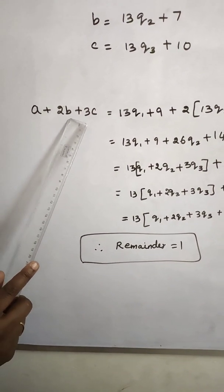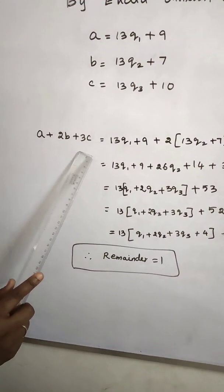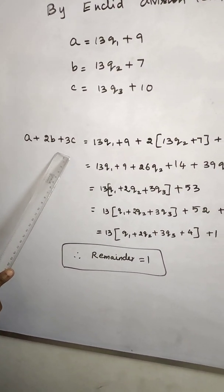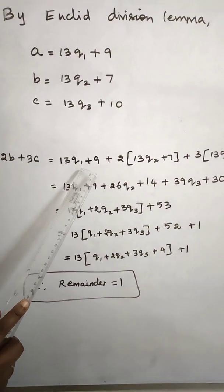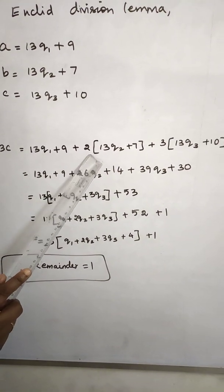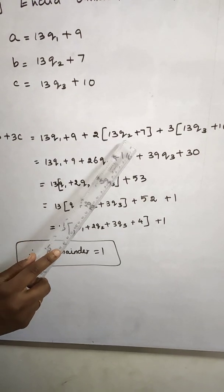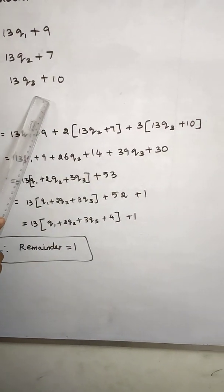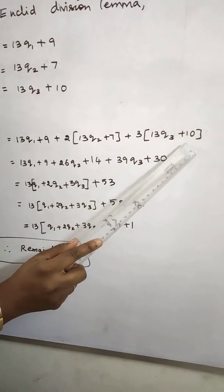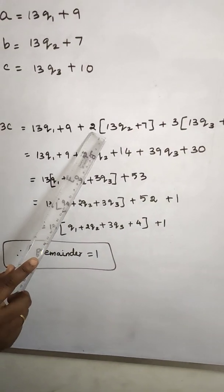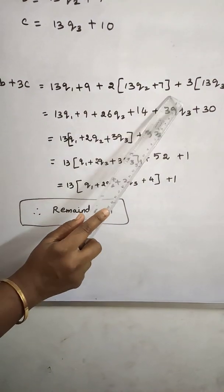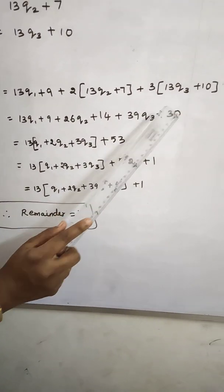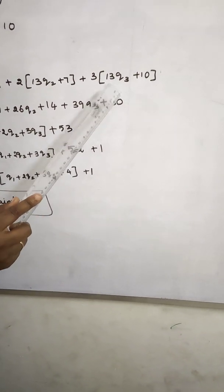A plus 2B plus 3C, this thing is divided by 13. First, substitute values. A is equal to 13Q1 plus 9, 2B is equal to 2 times 13Q2 plus 7, which equals 13 times 2Q2 plus 14, and 3C equals 13 times 3Q3 plus 10, which equals 39Q3 plus 30.